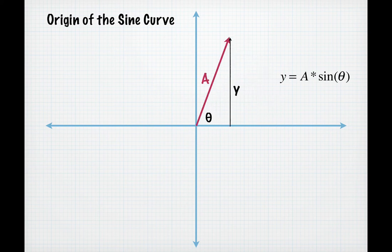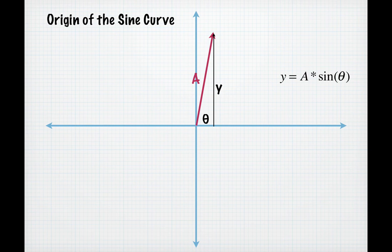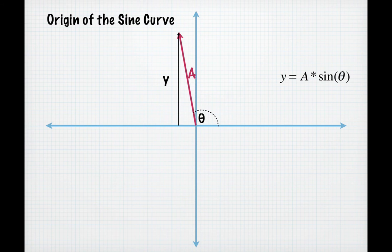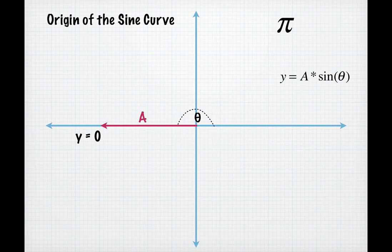And you can see that the y value increases until it reaches a certain maximum value and that maximum value will occur when your angle is pi over 2. The y value will then start decreasing as we continue to increase the angle until we get to a point where the y value is once again zero.